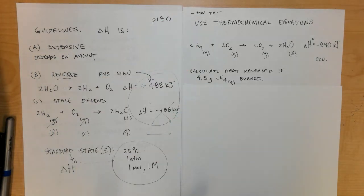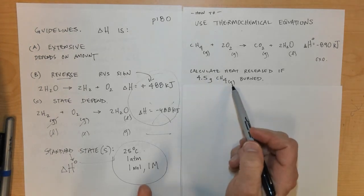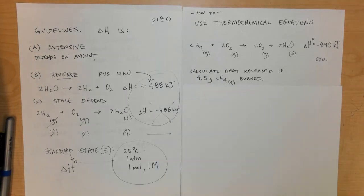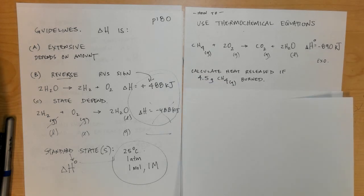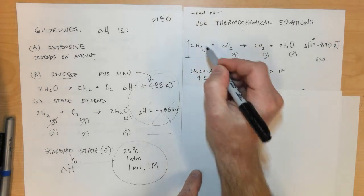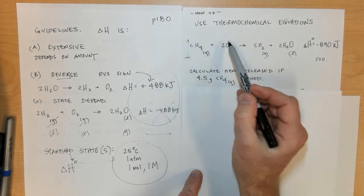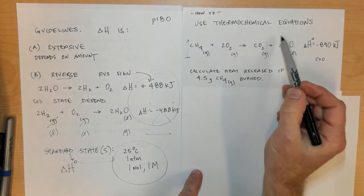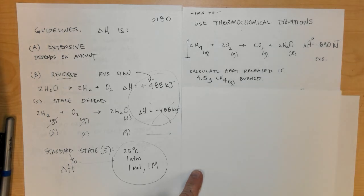Let's calculate the heat released if we combust 4.5 grams of CH4 gas. We're not combusting exactly one mole of CH4, because right now this equation is written for one mole of CH4. We don't have one mole, we have 4.5 grams.